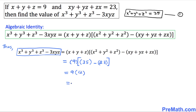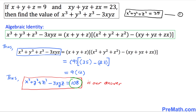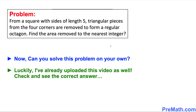9 times 12 equals 108. So x cubed plus y cubed plus z cubed minus 3xyz turns out to be 108 as our answer. Here is your assignment — can you do it on your own? I have already uploaded that video as well, so please go ahead and check it out. Thanks for watching, and please don't forget to subscribe to my channel for more exciting videos. Bye!